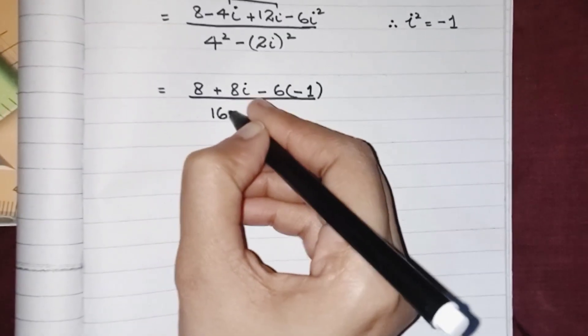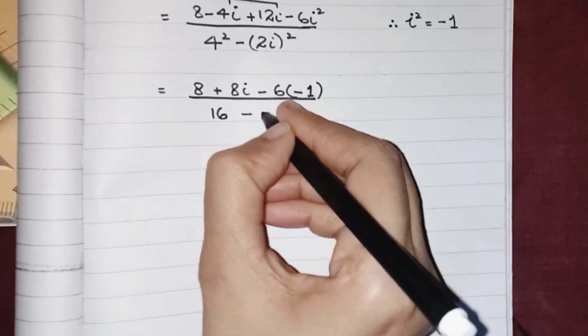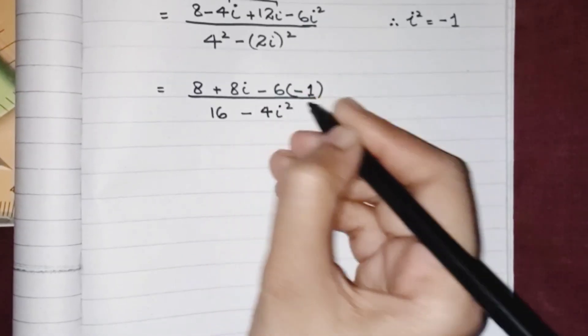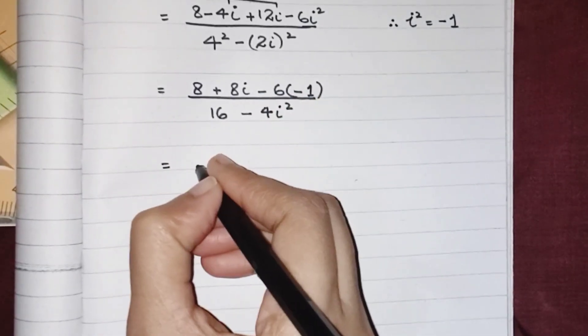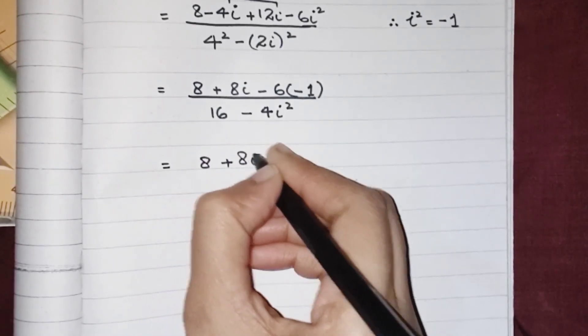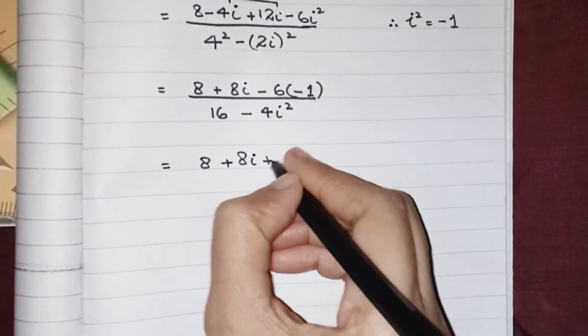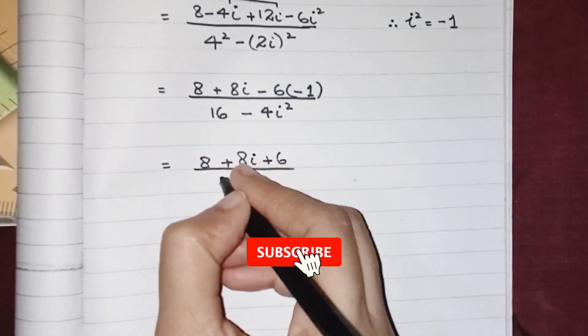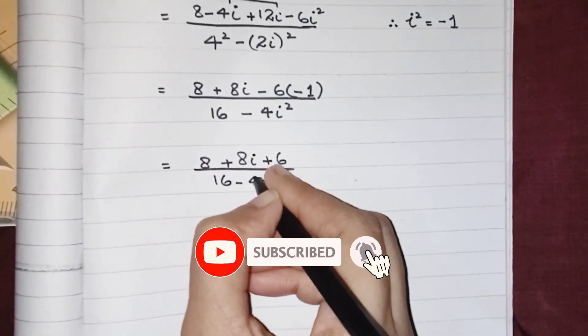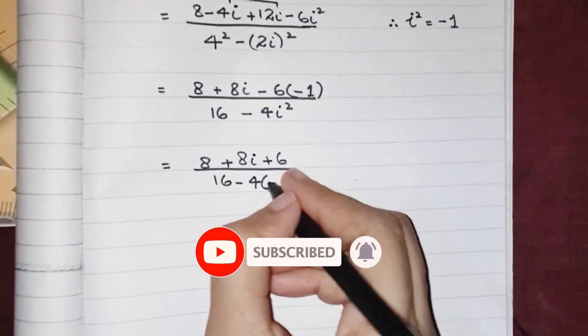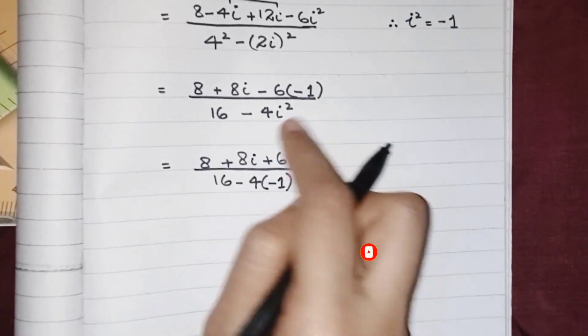The square of 4 is 16 minus 4i squared. 8 plus 8i minus minus 6, plus 6, upon 16 minus 4. And we have to write minus 1 in place of i squared.